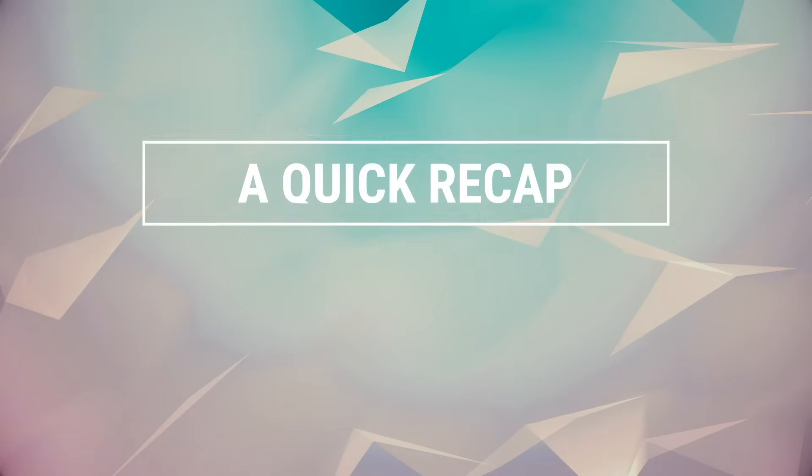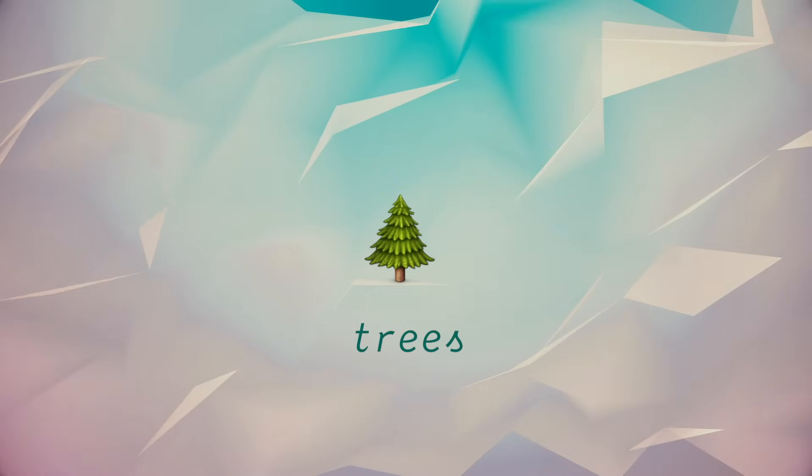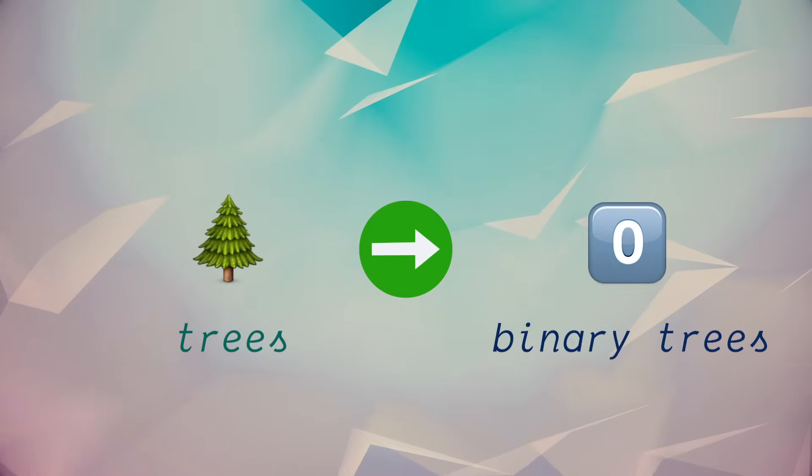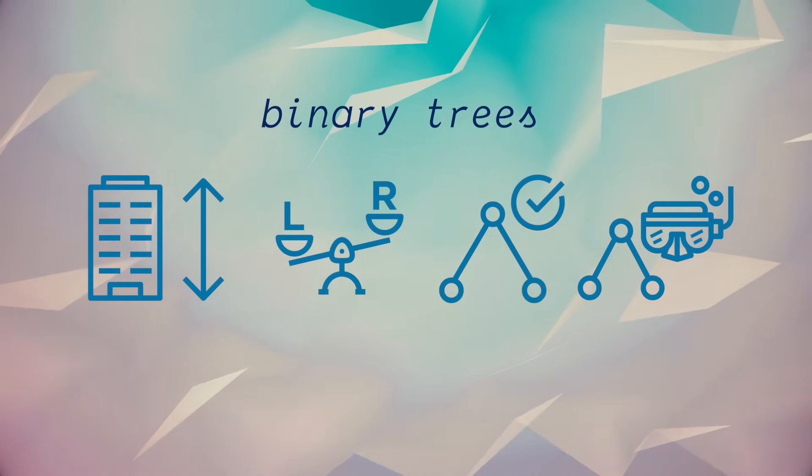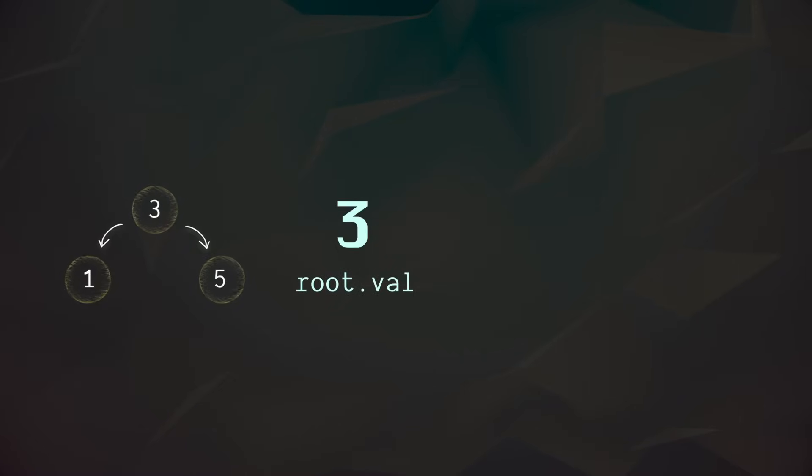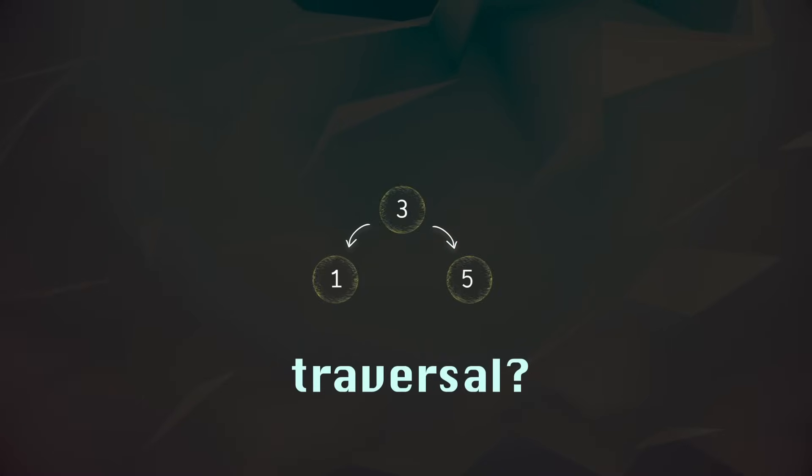So just to recap, there are a ton of different node and pointer based data structures. A very common one of those is trees. And within trees, we have binary trees. Binary trees are very common in algorithms. And they're actually not that different than a linked list. They both have a value property. But instead of a next property, a binary tree node has two pointers, left and right, which represent the left and right children. The node at the top that we're often passed in is referred to as the root. Then we can follow a root down a branch all the way to its leaf, a node with no children.